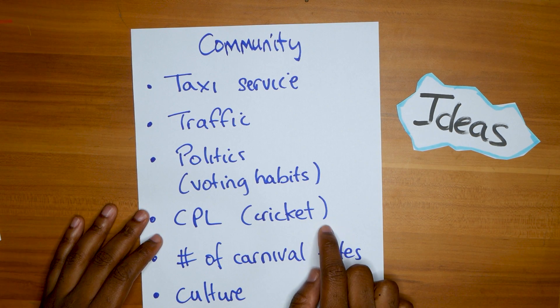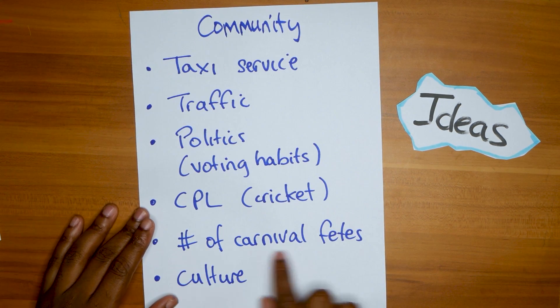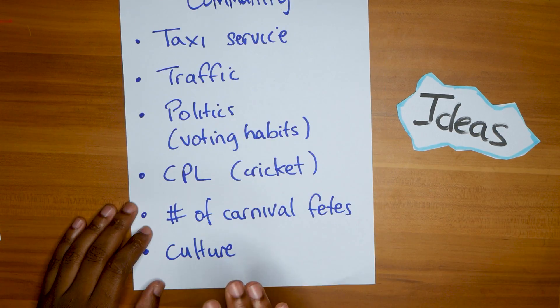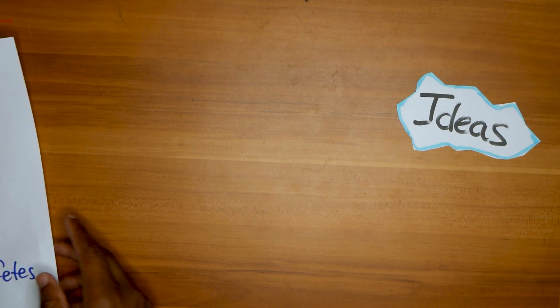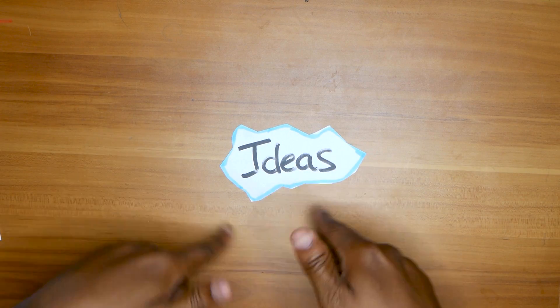Or something more adventurous, maybe regional, like CPL cricket—check out the statistics of your favorite CPL cricket team. Or number of carnival fetes in terms of time of the year, or anything with your culture would be really good to do an SBA on. So I hope these topics give you a good look at ideas for your SBA.